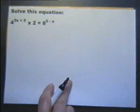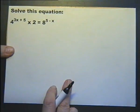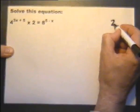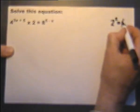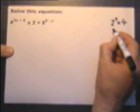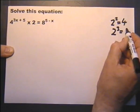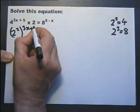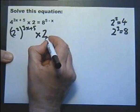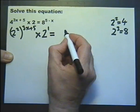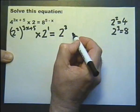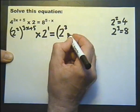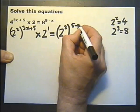Let's have a look at this one. Again, spotting that 4 could be written as 2 to the power of 2, and 8 could be written as 2 to the power of 3. So instead of 4, I'm going to write 2 squared — 2 raised to the power of 2 — which is then raised to the power of 3x plus 5, multiplied by 2, written as 2 to the power of 1, equals 8, which is 2 raised to the power of 3, which is then raised to the power of 5 minus x.